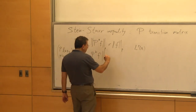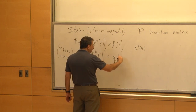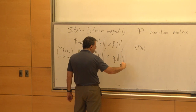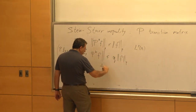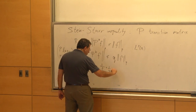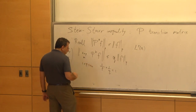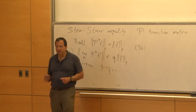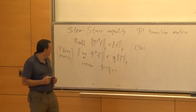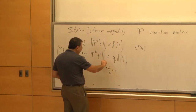The inequality says this supremum is less than the norm of F with a correction factor, which is the conjugate exponent Q, where one over p plus one over Q equals one. P is something between one and infinity, and so is Q. The main case today is little p and little Q both equal to two.